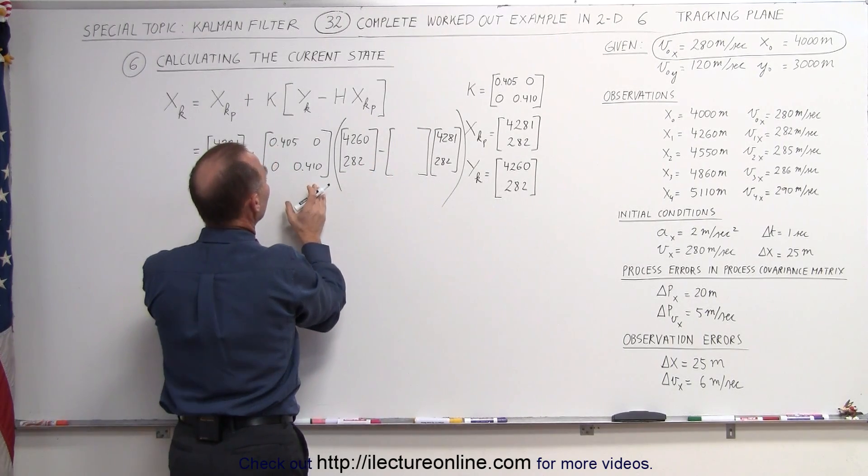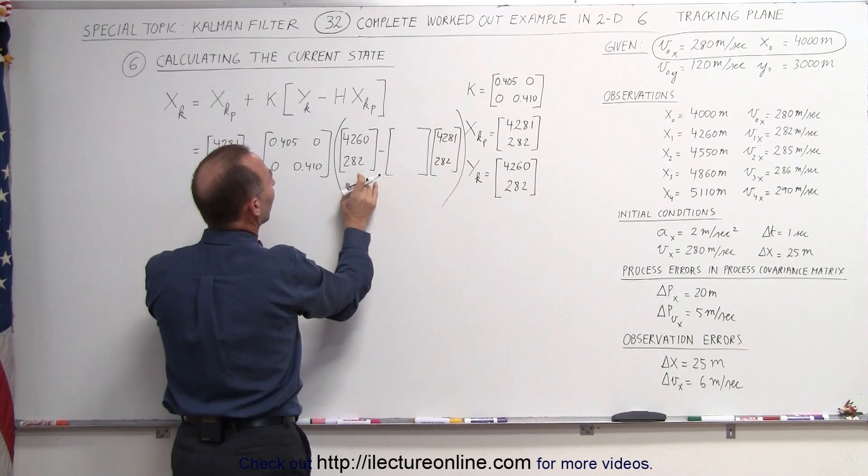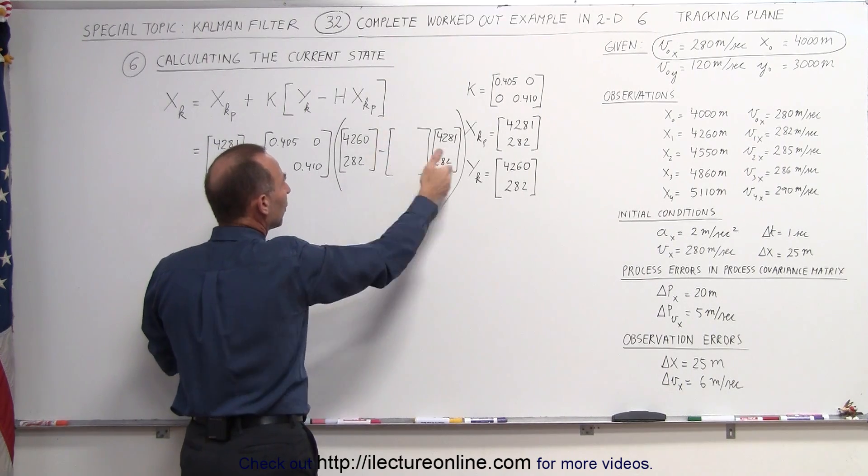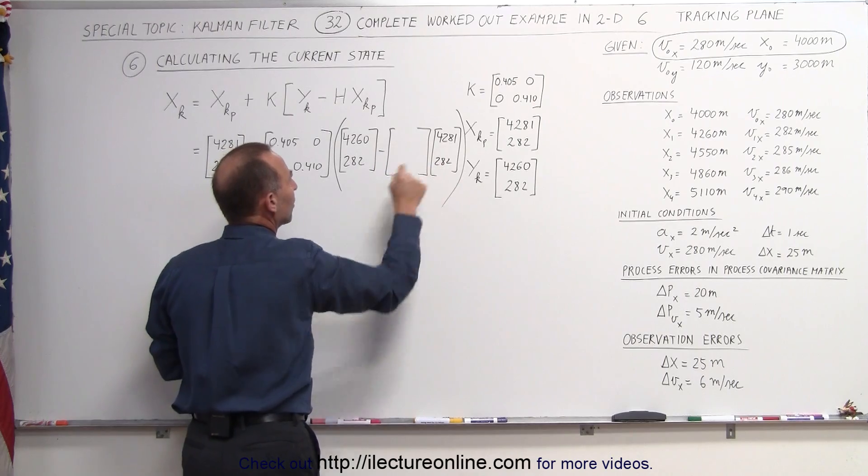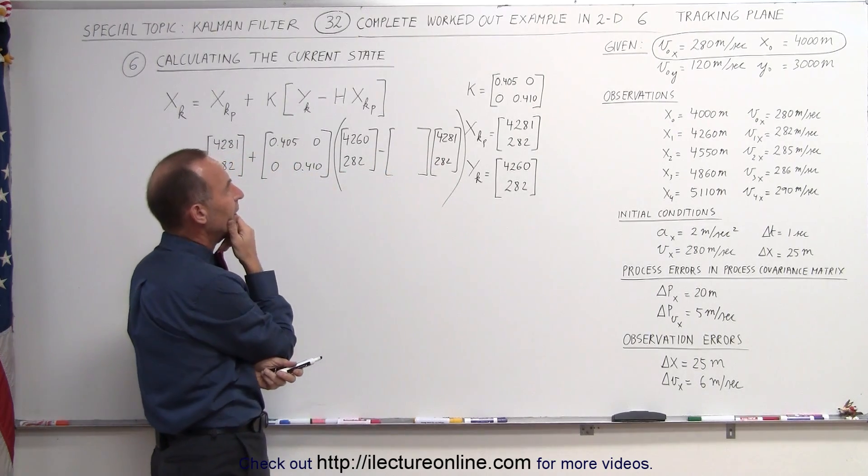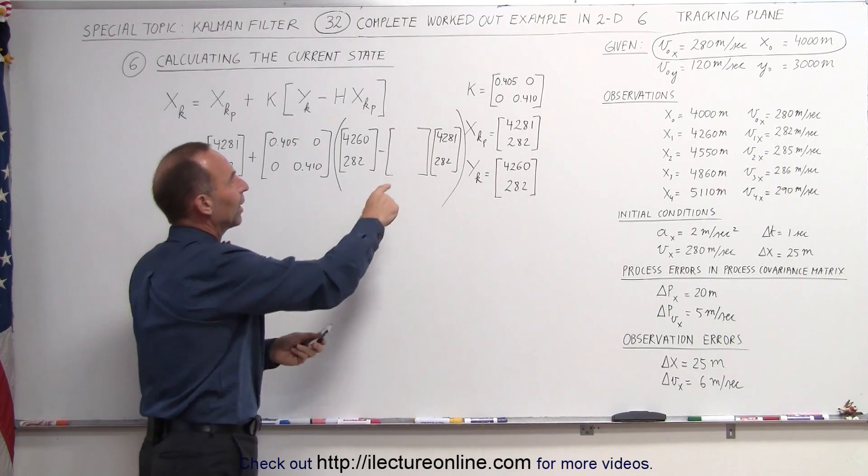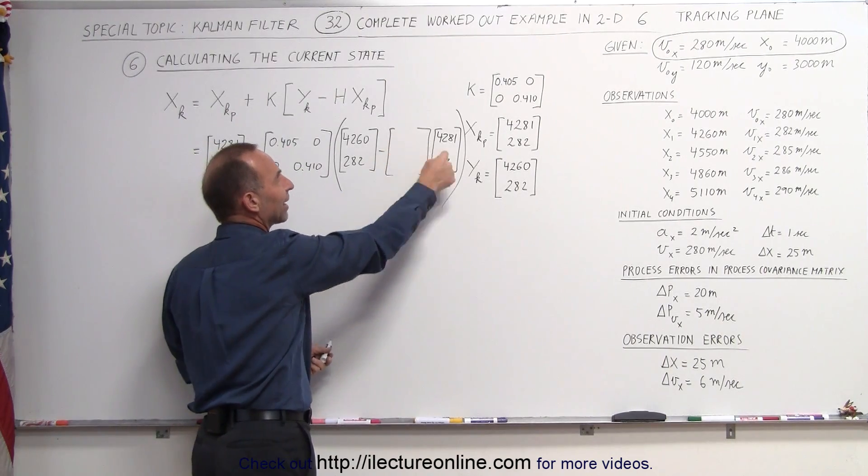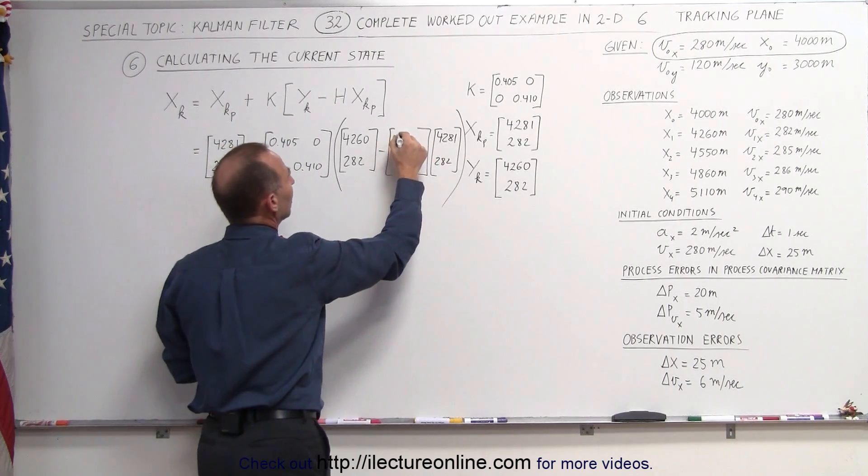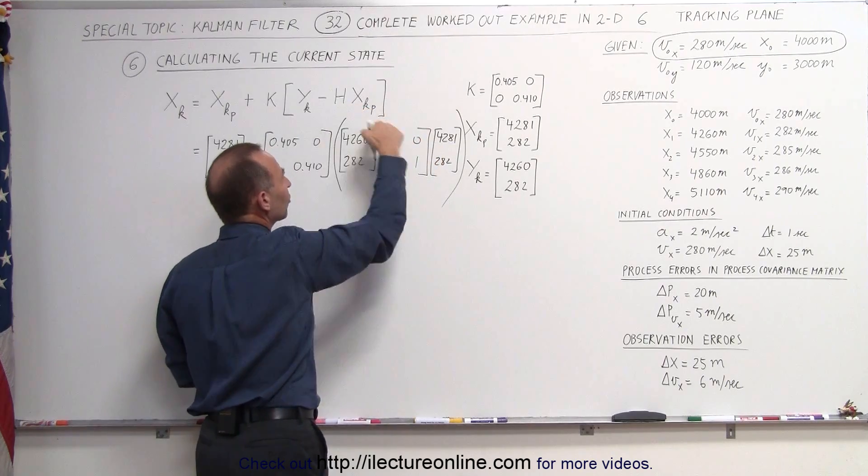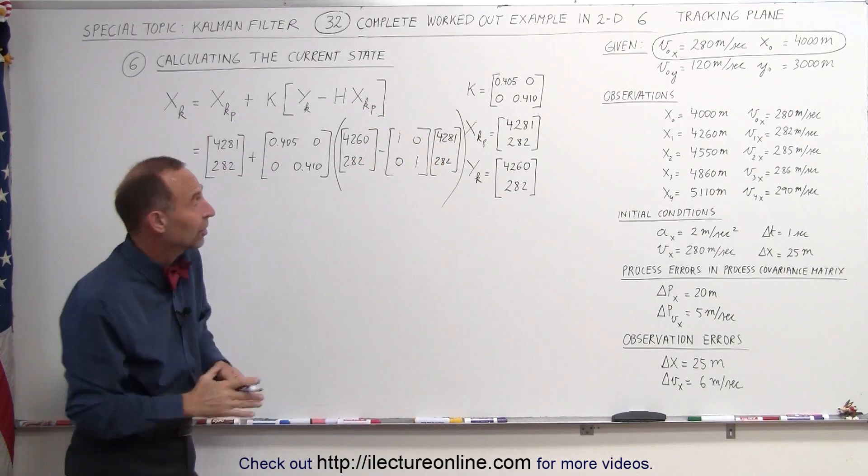Now what does this need to be? I want to end up with a 2 by 1 matrix because I have a 2 by 1 matrix here. I need to subtract the 2 by 1 matrix here. So I need a 2 by 2 here, otherwise I can't do the multiplication. So the H matrix here simply becomes the identity matrix again.